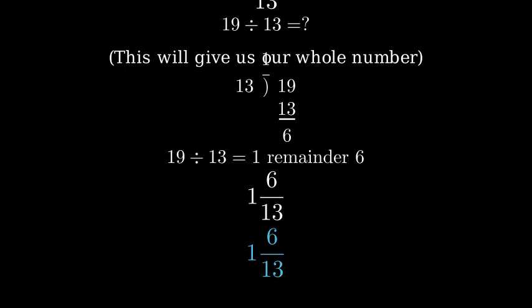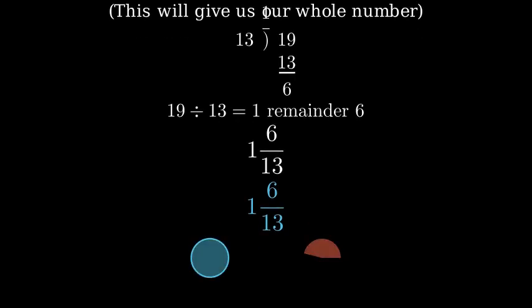Let's visualize what this means. Here we have 19 thirteenths represented as parts of circles. Thirteen parts make one whole circle, and we have six parts remaining.